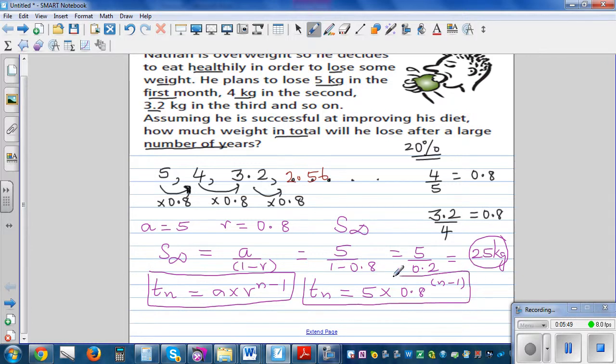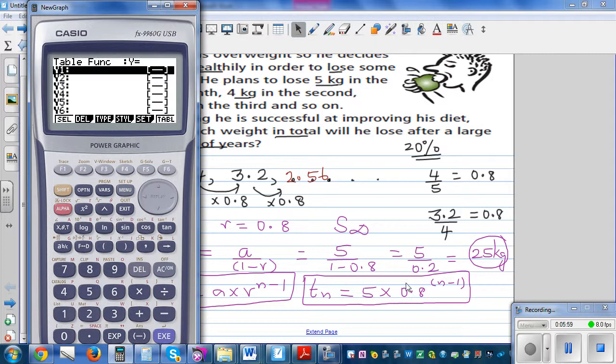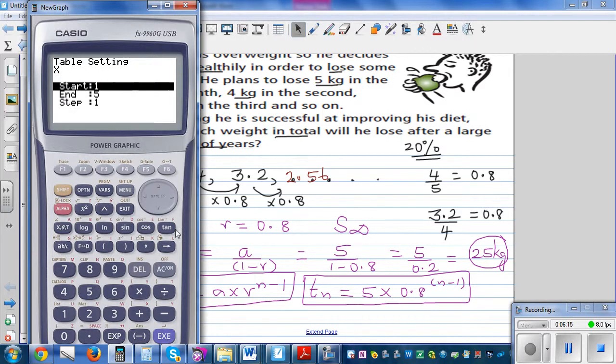So this is my graphic calculator. If you go to table and enter this formula which is 5 times 0.8 raised to, instead of n I'm going to put this x minus 1. And then go to set. I'll start from 1 to say 50 just to show you.